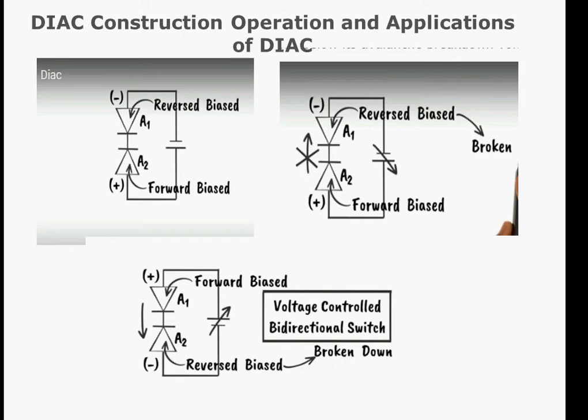To understand the working of the DIAC, let us consider two diodes, A1 and A2. This is the positive terminal of A1, this is the negative terminal N of A1 diode. And A2 diode, this is the anode B terminal, and this is the N terminal of the A2 diode. These two diodes are connected in series.